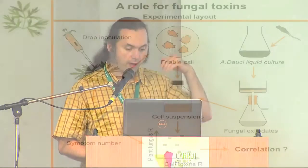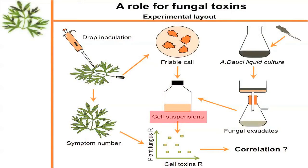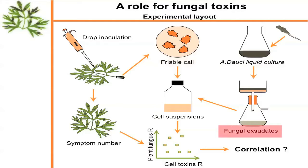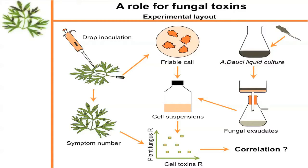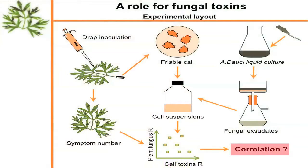We also produced plant cell suspensions from friable calli and confronted them with fungal exudates that are very raw. We grow the fungus in liquid culture, then filtrate out the mycelium, and that filtrate is what we put in the cell growth medium. The plant cells don't like it very much. But is there a correlation between how badly they react to fungal extracts and how badly the plant leaf reacts to fungal conidia?